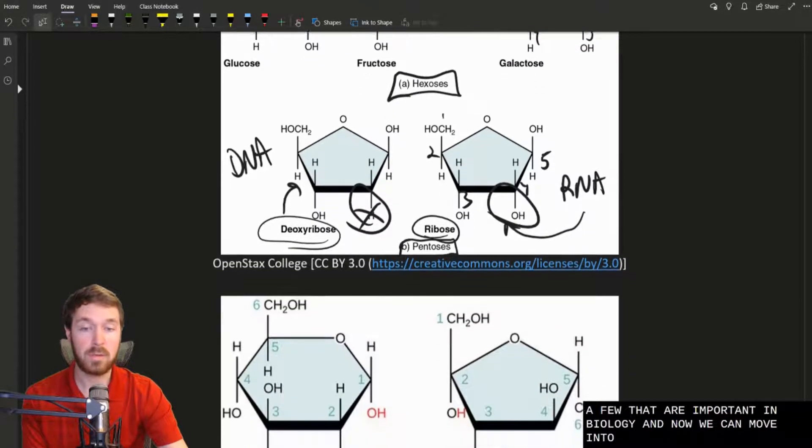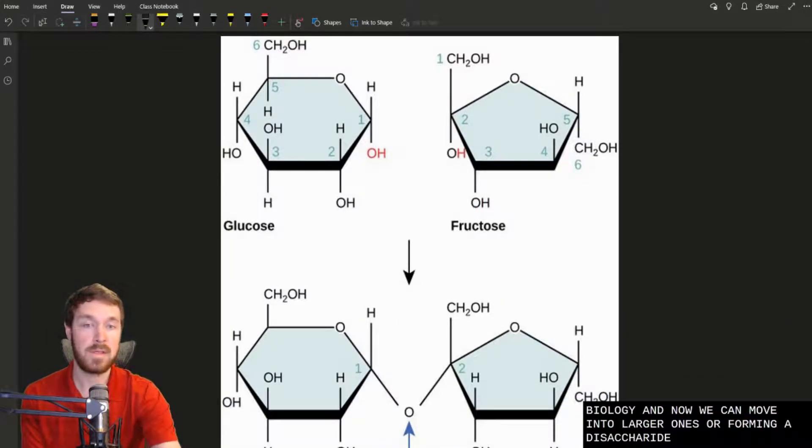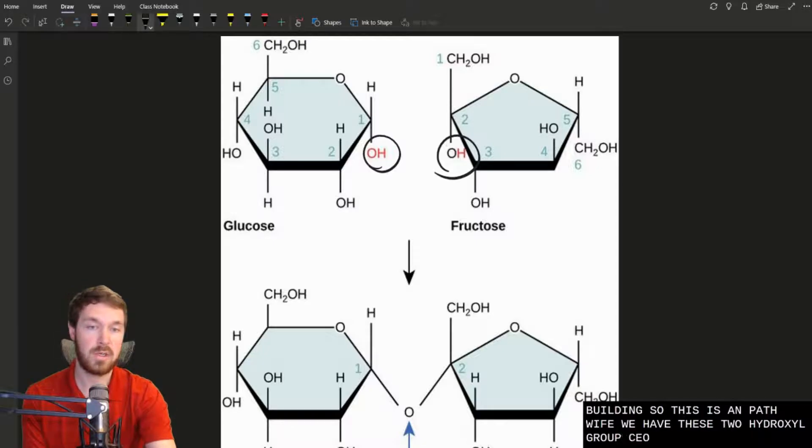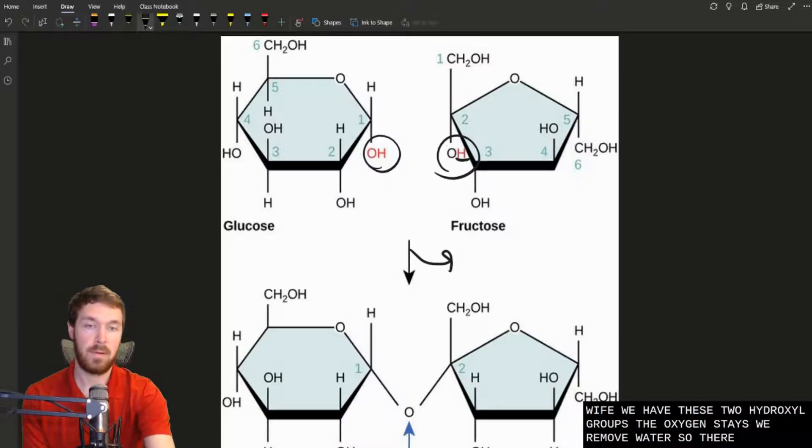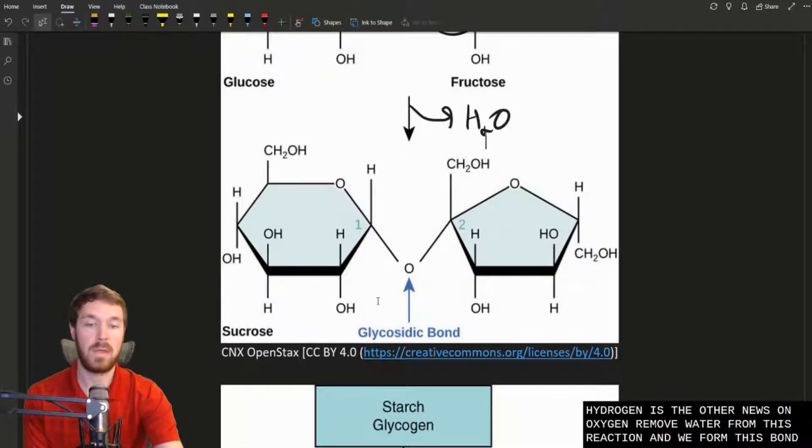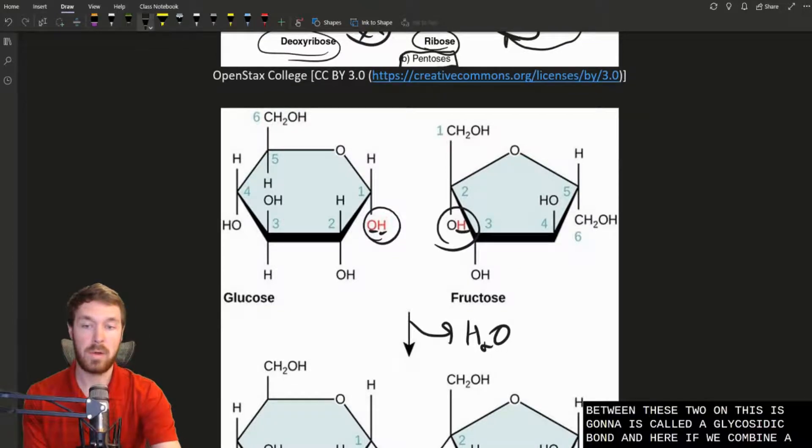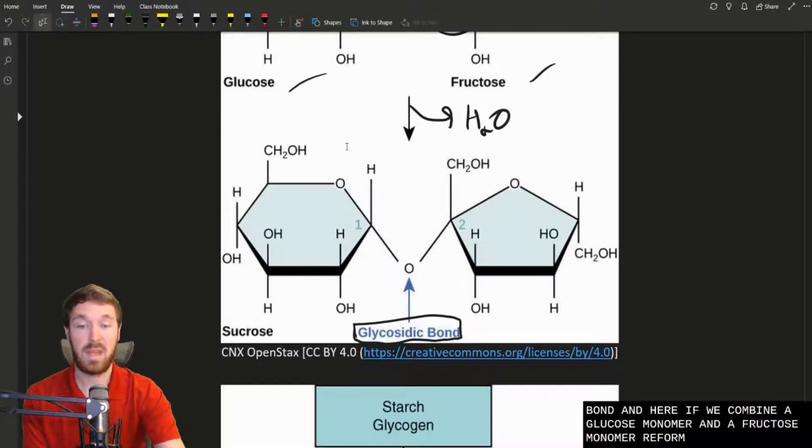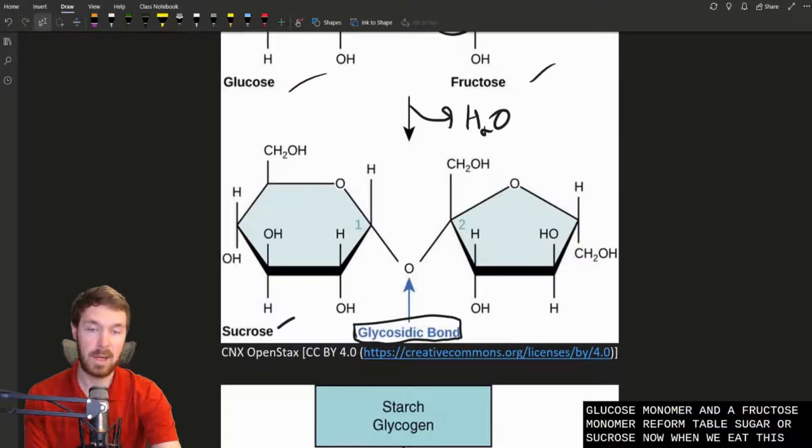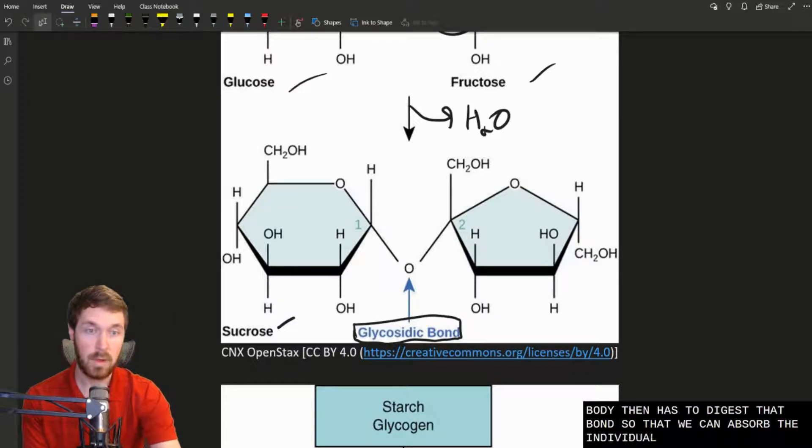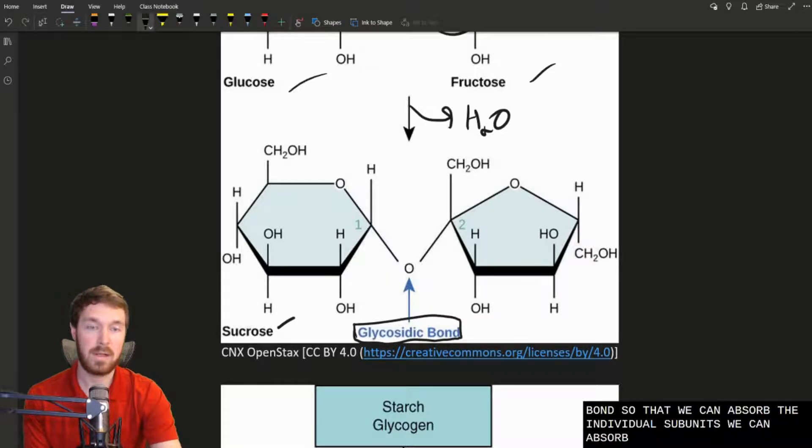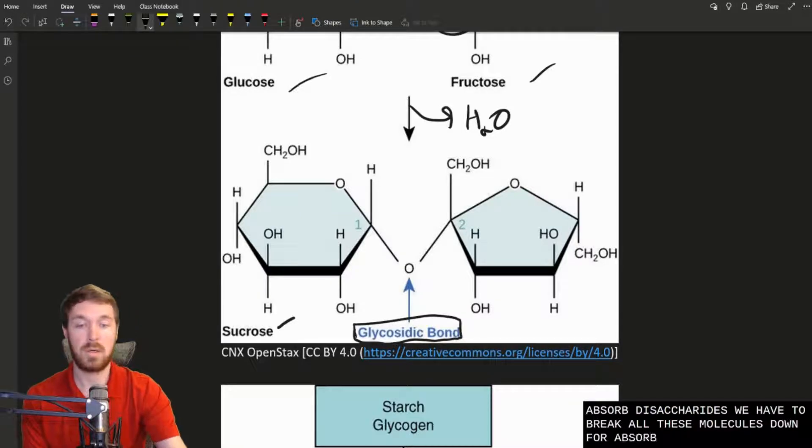Now we can move into larger ones or forming a disaccharide. So this is the same reaction we just discussed earlier. We are building, so this is an anabolic pathway. We have these two hydroxyl groups. The oxygen stays. We remove water and we form this bond between these two. And this is called a glycosidic bond. If we combine a glucose monomer and a fructose monomer, we form table sugar or sucrose. When we eat this, our body then has to digest that bond so that we can absorb the individual subunits. We can't absorb disaccharides. We have to break all these molecules down for absorption during digestion.